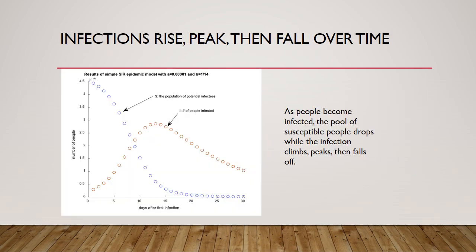If you use a computer to run this model, you have to input the transmissivity and the recovery rates. What you will find after introduction into a population is that this red curve — these red dots — represents the number of infections rising and then falling. The blue curves are the susceptible pool of individuals that can become infected. As more and more people get infected, we reduce the size of the susceptible pool, reach a peak limit of the number infected, and then it tapers off over time. As people become infected, the pool of susceptible people drops while the infection climbs, it peaks, and then it falls off.